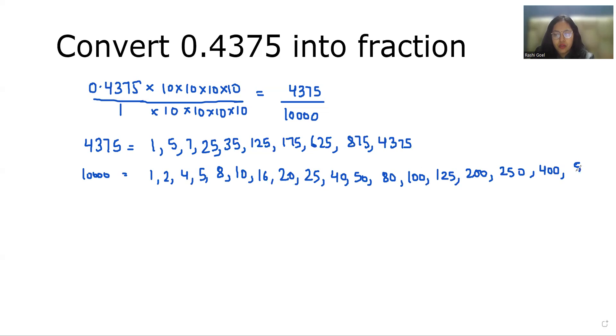500, 600, 625, 1000, 1250, 2000, 2500, 5000, and 10,000 itself. Now what is the greatest number that is common? That is 625.